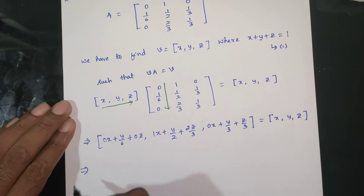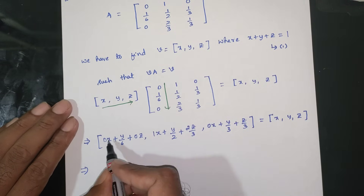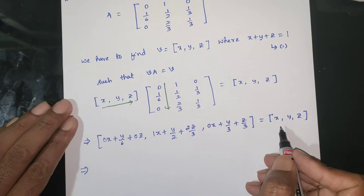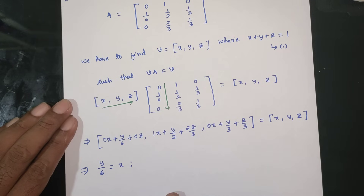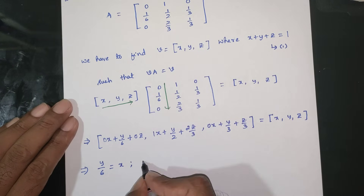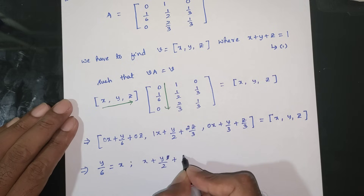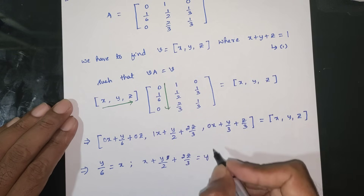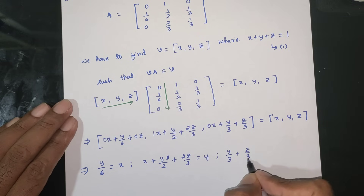Equating components: y/6 equals x (equation 1); x plus y/2 plus 2z/3 equals y (equation 2); y/3 plus z/3 equals z (equation 3).